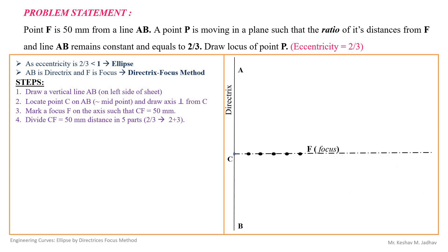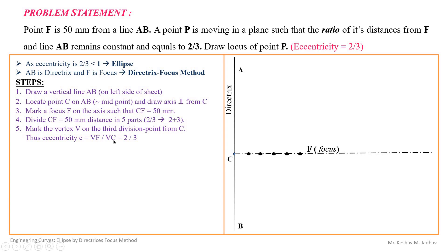Now locate vertex V on the CF line. The vertex is the point on the curve, so eccentricity equals the distance of that point from the focus divided by its distance from the directrix — that is, VF/VC = 2/3. We locate vertex V such that if VF equals 2 parts, then VC equals 3 parts. So from point C at the third division and from point F at the second division, we can locate vertex V.